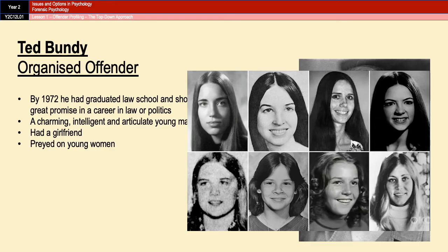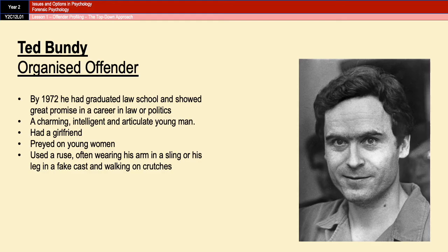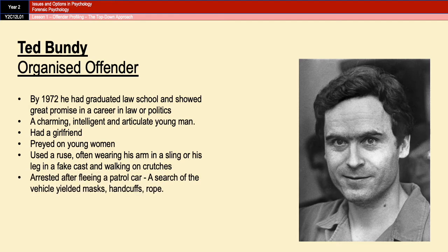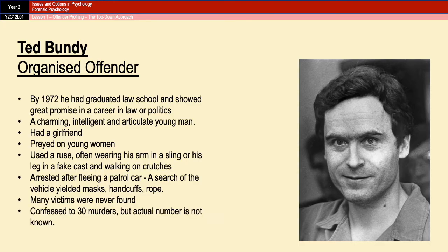He'd then grab them, bind them, and throw them in the back of his car or van, which shows a certain degree of planning and control. When first arrested, a search of his car yielded masks, handcuffs, and rope — again suggesting he planned his crimes. He confessed to 30 murders, but many of his victims were never found, and the true number remains unknown. The fact that many were never found indicates a high level of intelligence and planning, also evidenced by his university graduation.